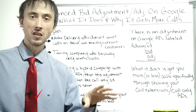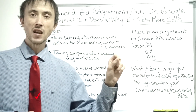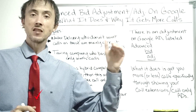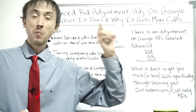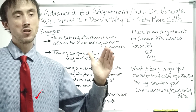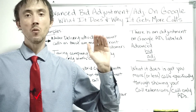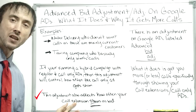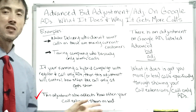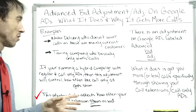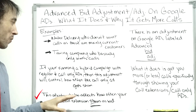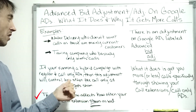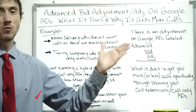Google is ultimately a bidding system — they want to show the most relevant ads so users keep clicking on ads in the future. However, if you have enough money, they'll show your ad anyway, even if it won't get the highest CTR. So if your business really relies on calls from a mobile device, you could do a plus 500% bid adjustment on your Advanced Bid Adjustment to get your call extension showing at a much higher percentage.